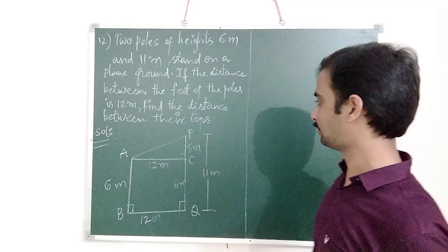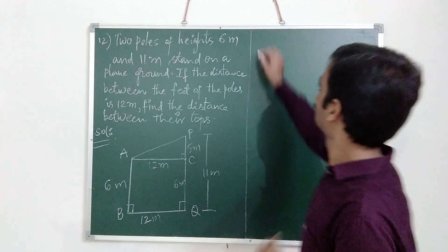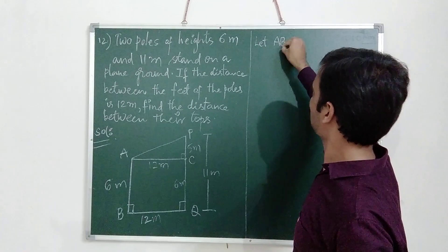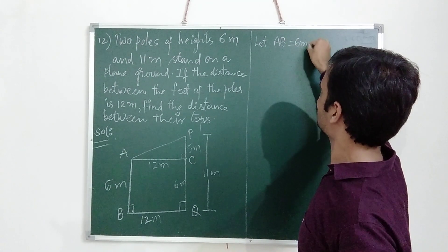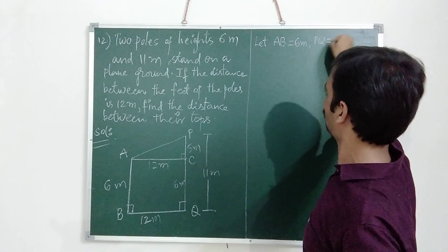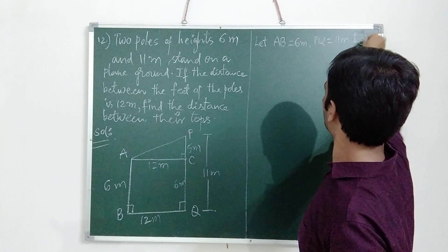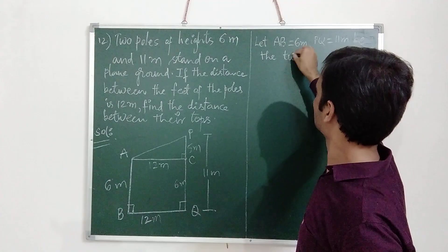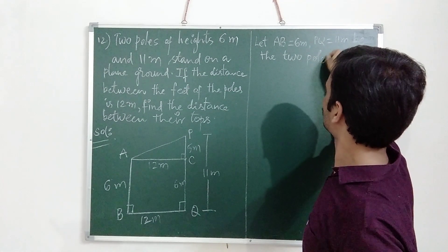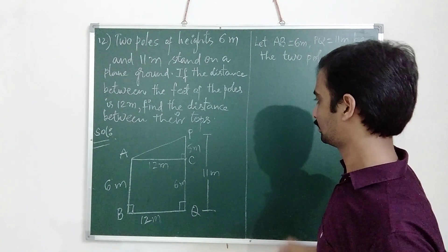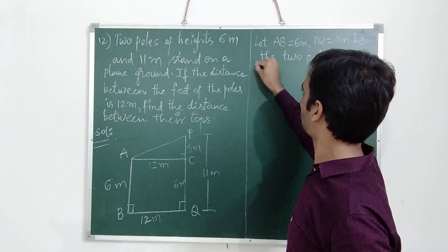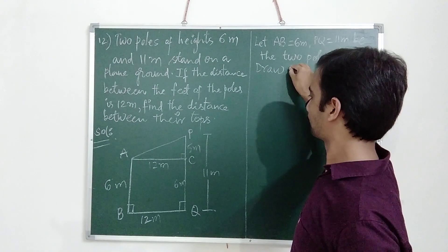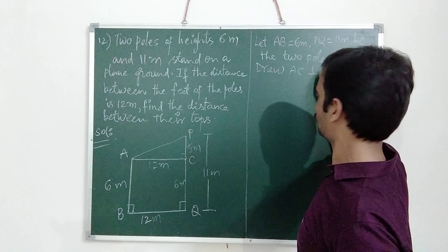AB is equal to 6m and PQ is equal to 11m — these are the two poles. Draw AC perpendicular to PQ.